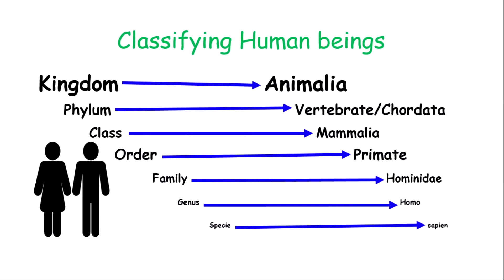Now let's look at an example of how we classify human beings. Remember the order from the mnemonic: kingdom, phylum, class, order, family, genus, and species. The kingdom for the human being is Animalia — we belong to the animal kingdom, that large group of animals.